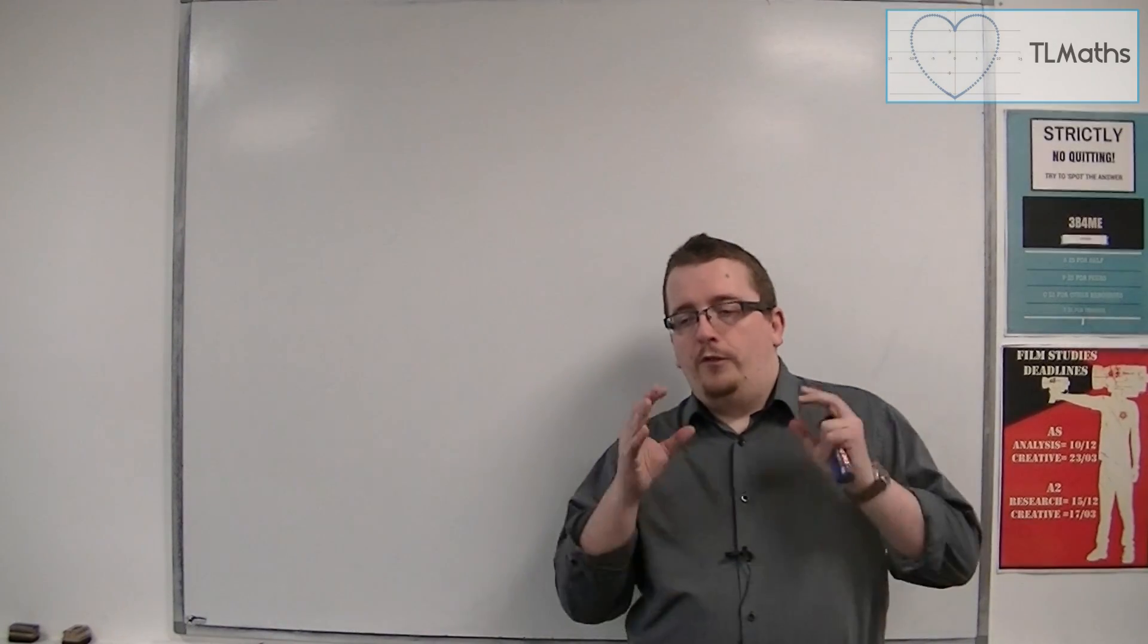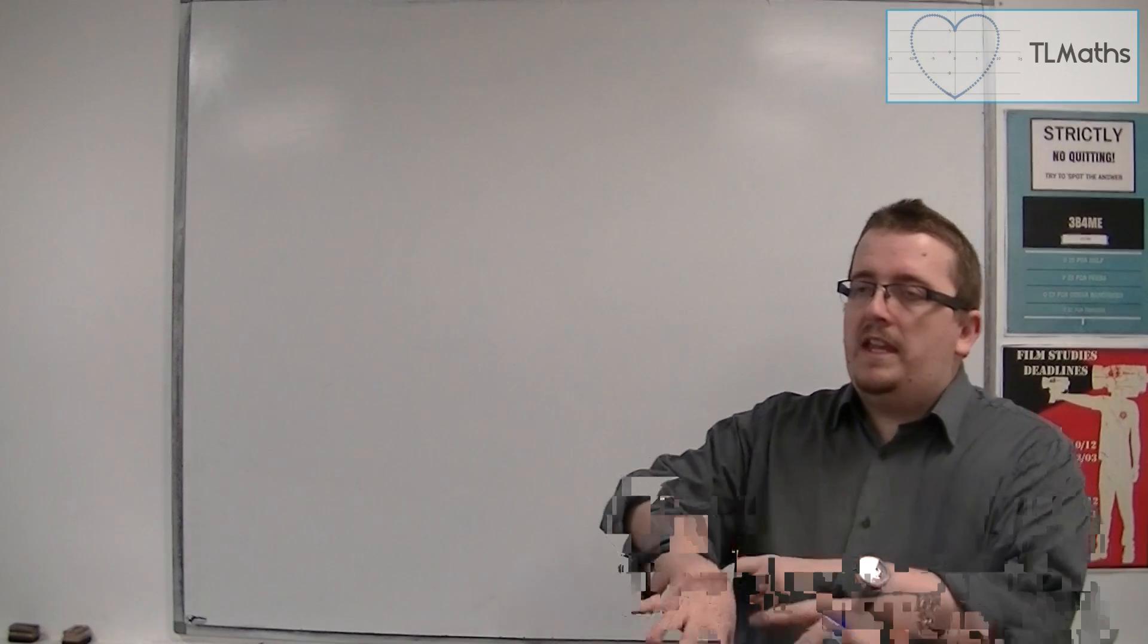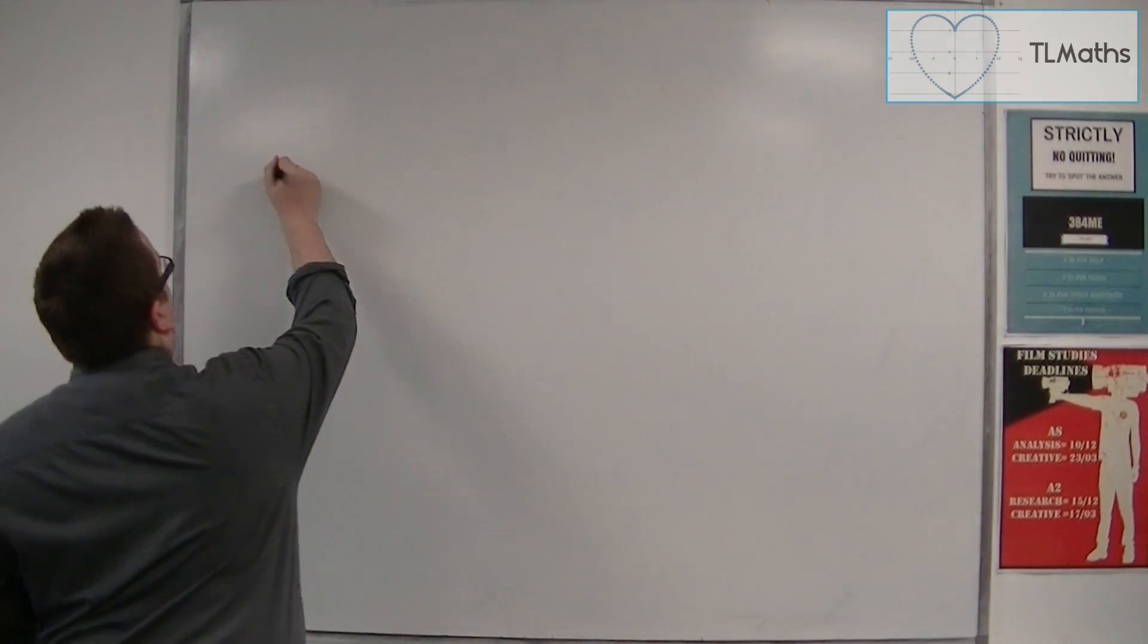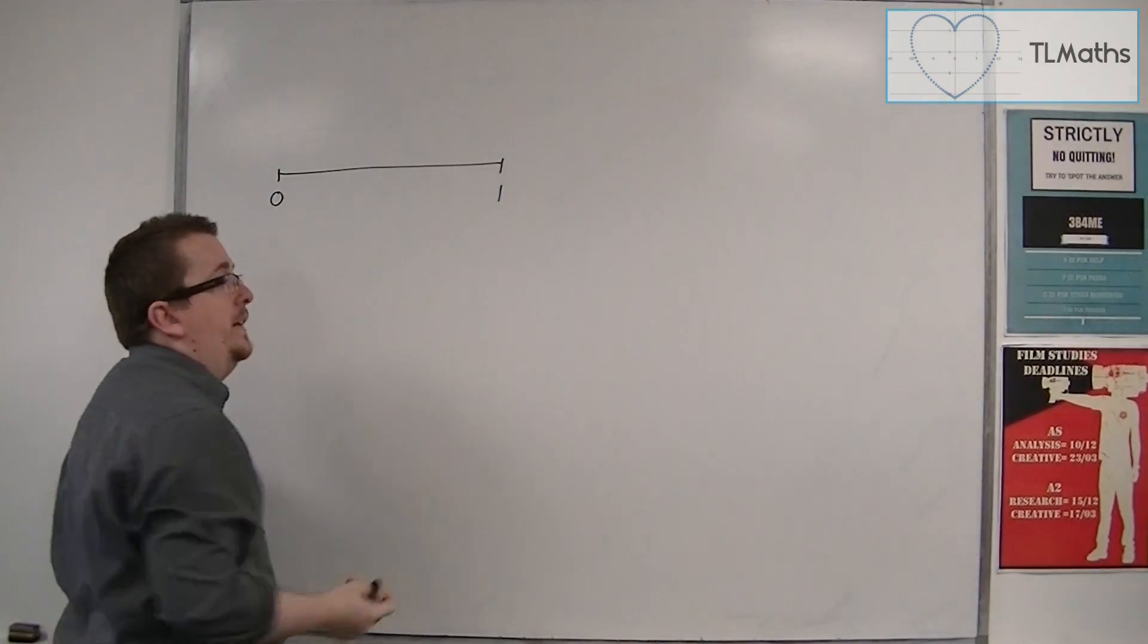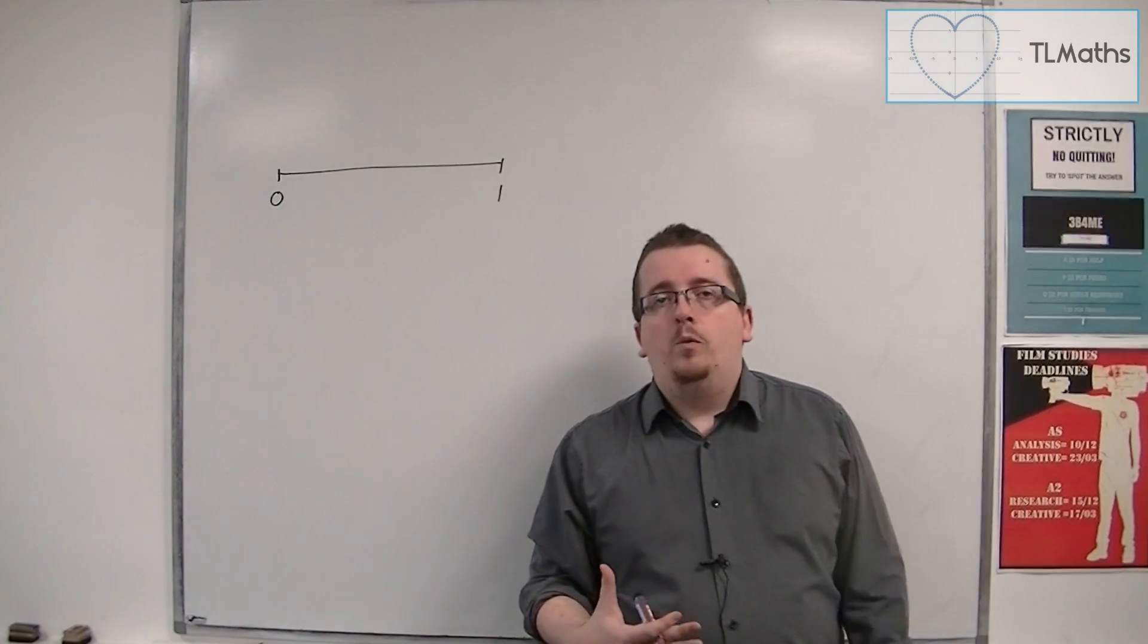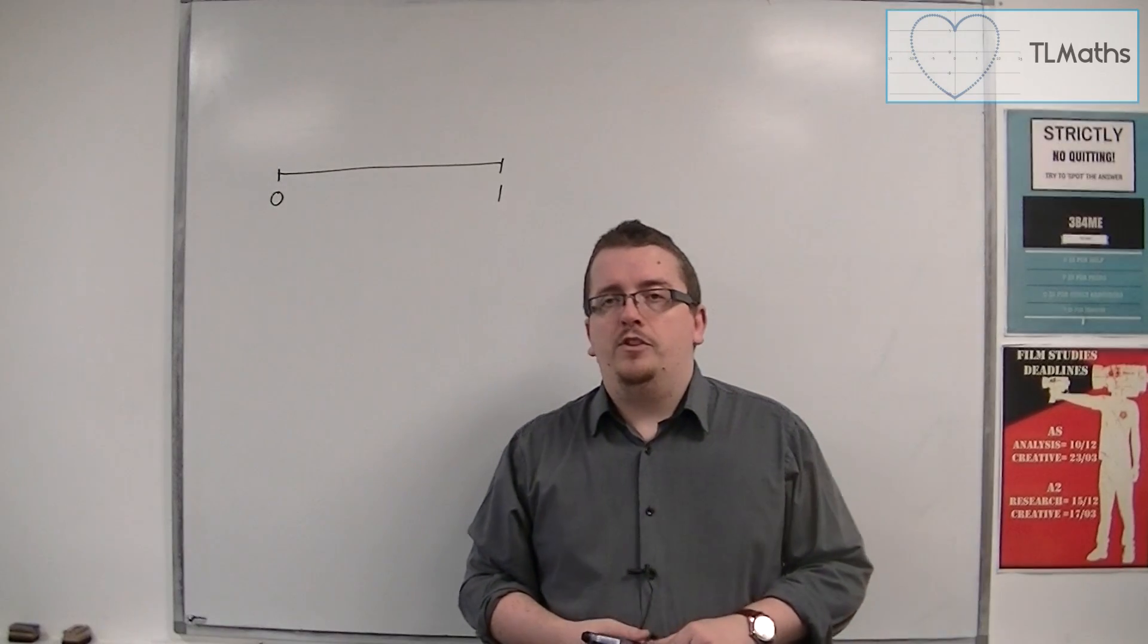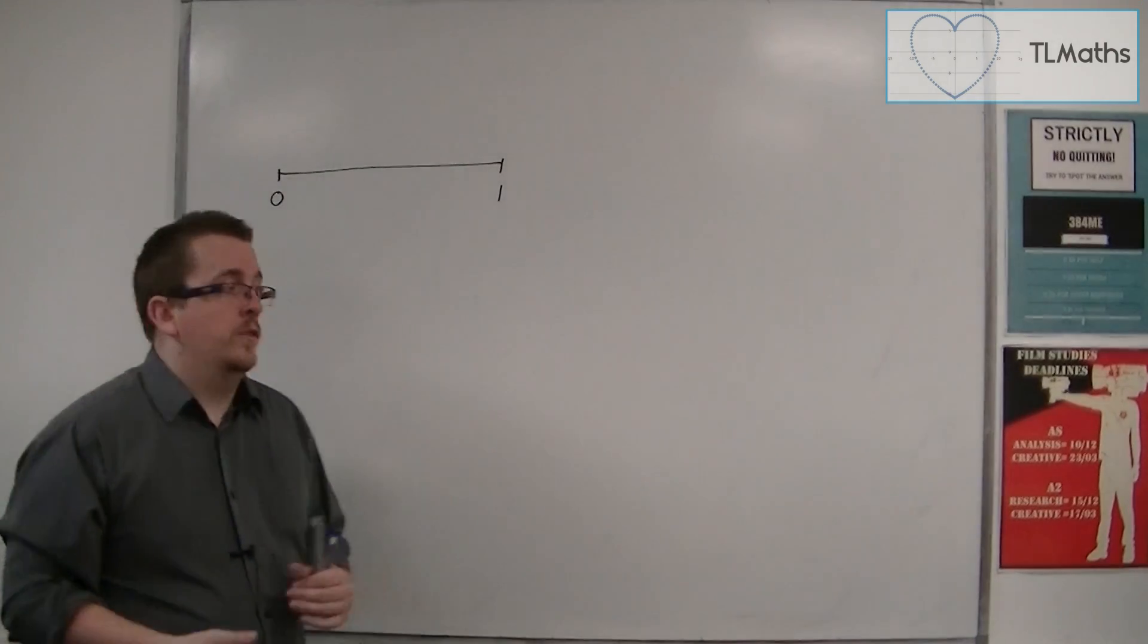So first of all, when we're talking about a probability, then in the majority of cases we will be using values from 0 to 1. Okay, so probability works on a number line from 0 being impossible to 1 being certain. So in the majority of cases, we'll be working with either decimals or fractions to represent probabilities. You can also use percentages, but I tend not to use those unless the question uses them, of course.